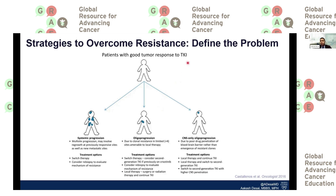— who is responding to first-line treatment, I think progression can be classified into three different types. First, there is systemic progression: multi-site progression involving either previously responsive sites and perhaps some new additional sites of tumor. Second, there is oligoprogression, which Dr. Anger covered elegantly in the morning session.